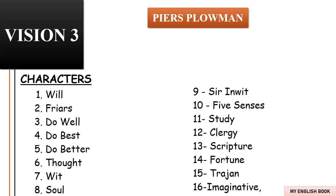Vision Three begins: Will sleeps and has his third dream. A man named Thought teaches Will about the nature of Do Well, along with two other Christian values — Do Better and Do Best. Thought says: Do Well engages in honest labor; Do Better helps others; and Do Best rebukes sinners. Will is still confused, so Thought suggests he speak with a man named Wit. Wit explains these values as residing in the heart of a Christian — Do Well and Do Better attend to the soul, while Do Best offers guidance. This entire group is protected by a knight named Sir Inwit and his five sons, who are the five senses.